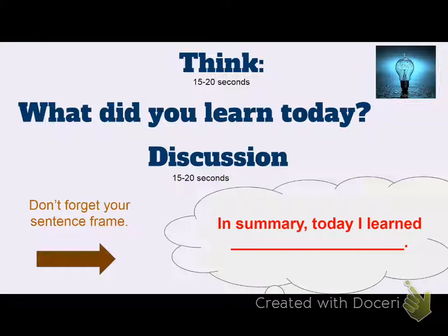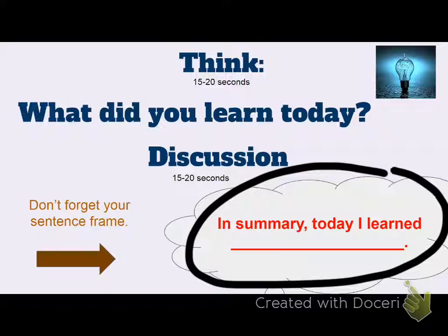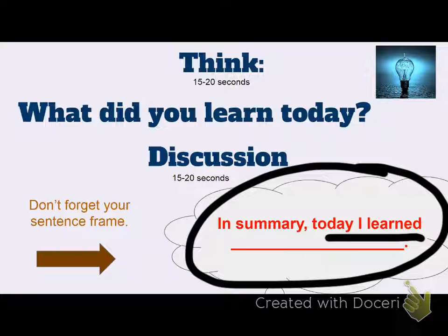All right, Bobcats, it's that time — what did you learn today? In summary, today I learned that numbers are connected. There's a family of numbers relating multiplication and division. I also learned that if I know my multiplication facts, that will help me with division. Or, if I know division really well, it will help me solve a multiplication problem. So as you start working on your independent work, think about the family — think about how multiplication and division are related. That will help you today. Thank you for your attention.